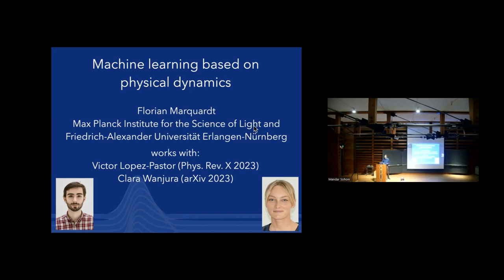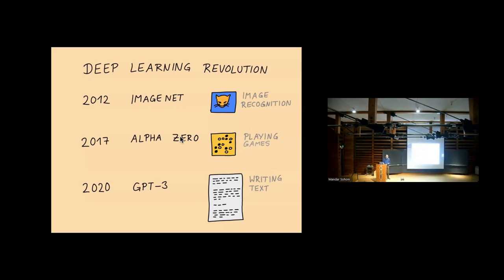Let's jump right in. You all know, of course, about the deep learning revolution. By now, computers can recognize images better than humans can do, play games better than humans can do, and at least they can write text that superficially looks as good as what humans can do, unless you start to read it in detail.